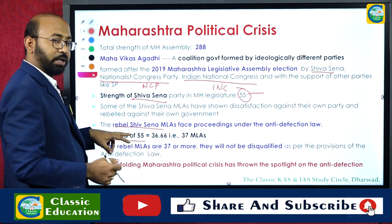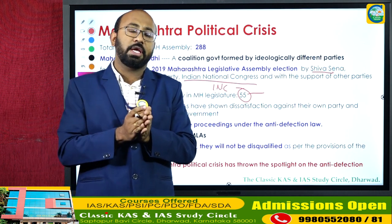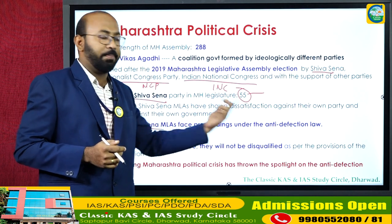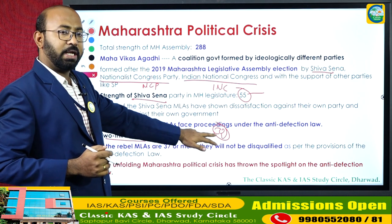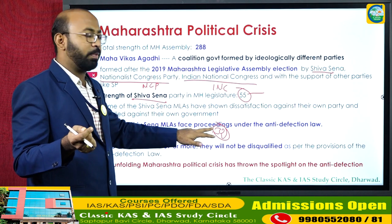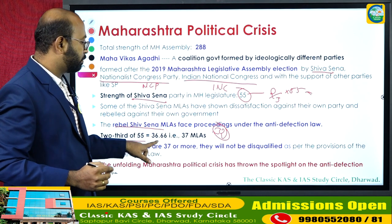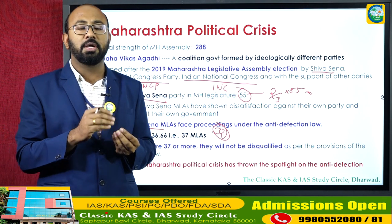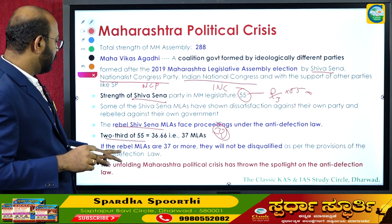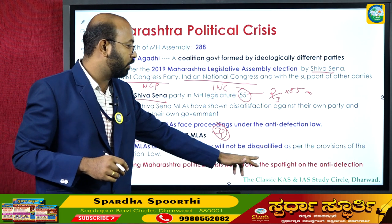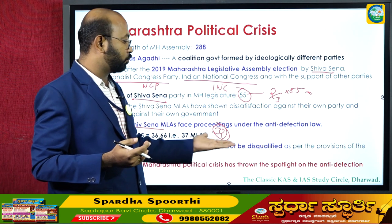Under the anti-defection law, if two-thirds of a party's members agree to merge with or form another party, that is allowed. Two-thirds of 55 Shiv Sena MLAs is approximately 37. Currently around 32 rebel MLAs have fled. Since 32 is less than 37, they do not meet the two-thirds threshold required to escape the provisions of the anti-defection law.